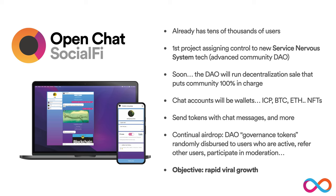OpenChat is a pioneering SocialFi service built on the Internet Computer — it's a chat service where all chat messages are processed by smart contracts on the Internet Computer and stored on the Internet Computer, including images and video. It already has tens of thousands of users. It's the first project planning to assign control to a Service Nervous System, which is a kind of advanced community DAO — tech that's just coming online right now in beta form on the Internet Computer.